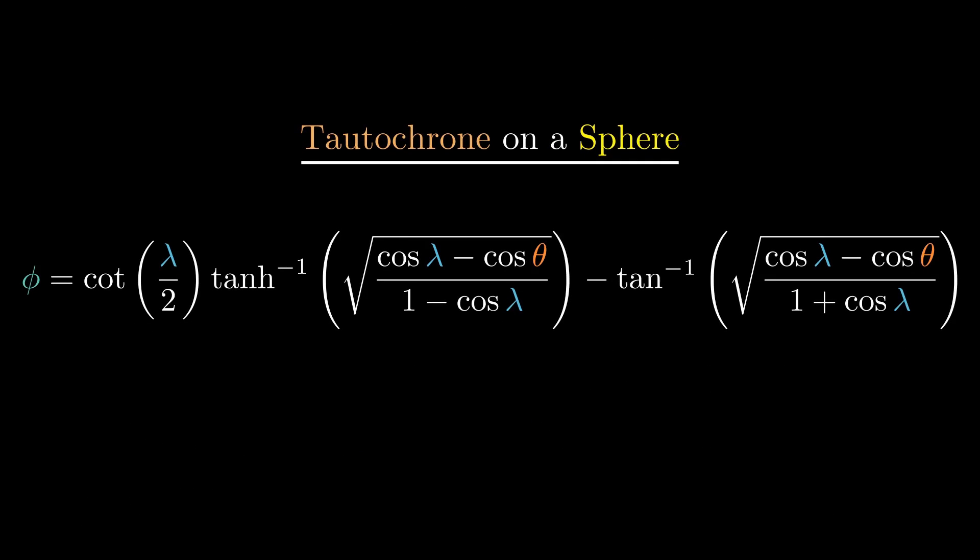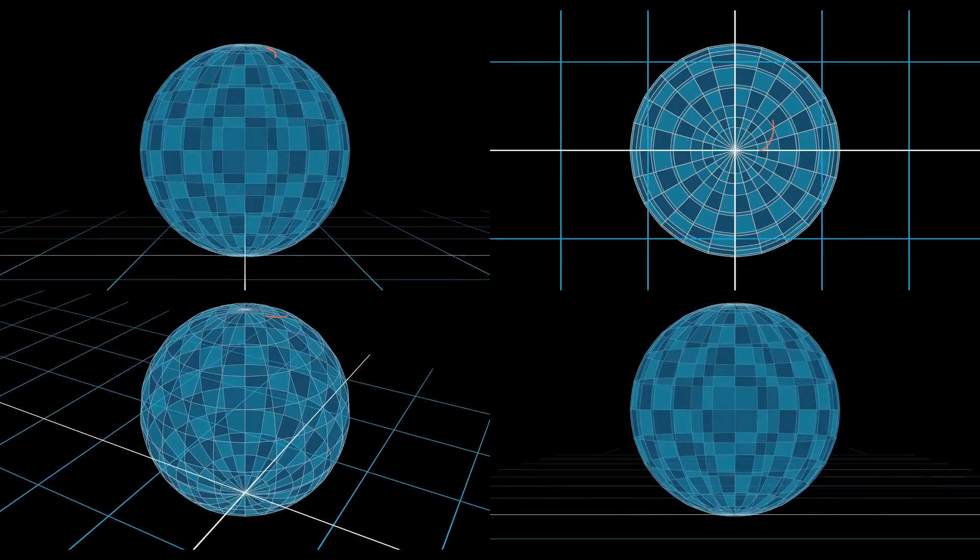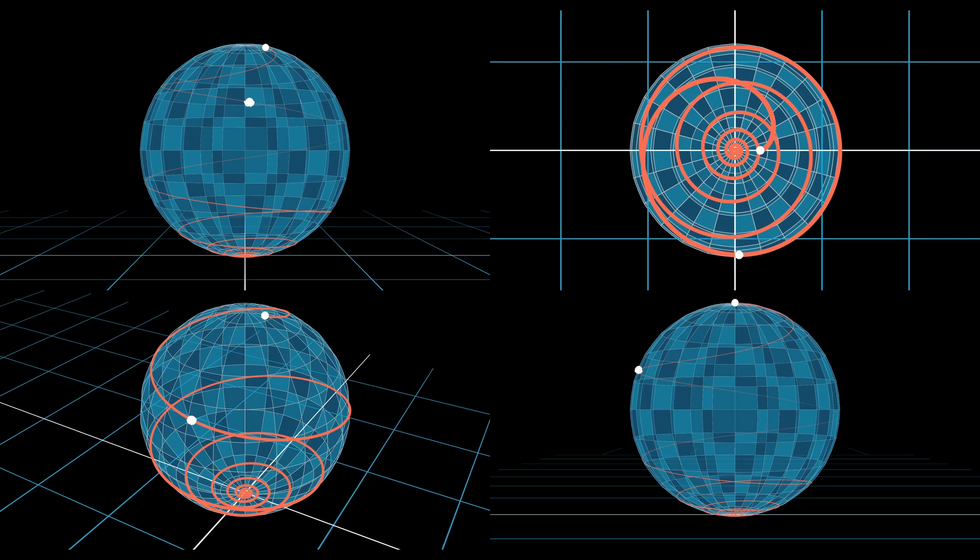And yes, there we have it, the cycloid's counterpart on a spherical surface, where the time taken by a particle sliding along this curve to reach the south pole is independent of its starting position.